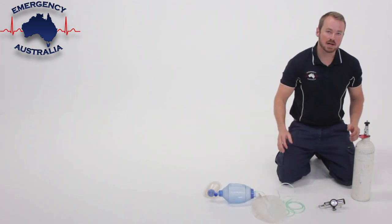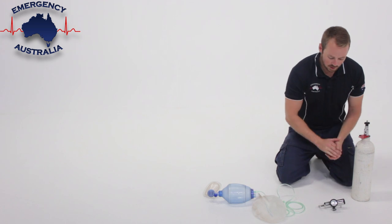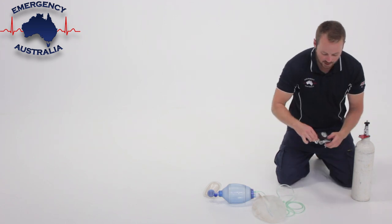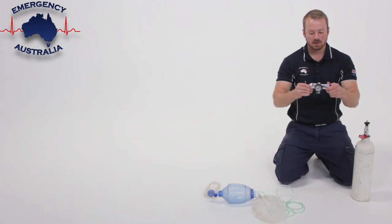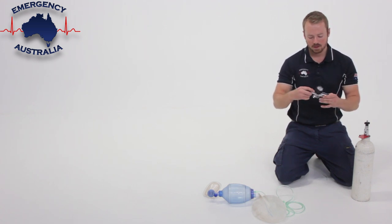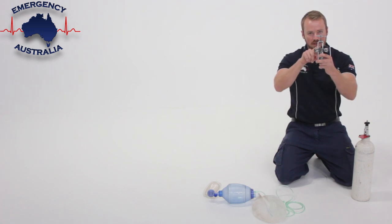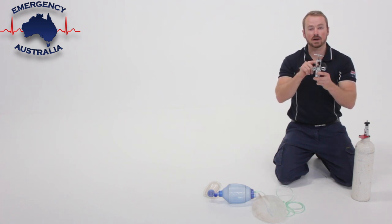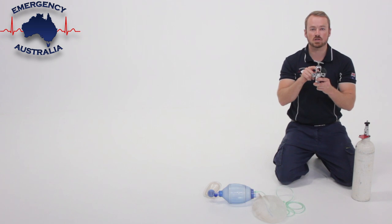Next is to set up the bottle. With the bottle we've got our regulator here. This regulator is designed to go from half a liter a minute to 25 liters per minute. Inside the regulator there is an O-ring. This can become perished over time, so just ensure you check it every now and then to ensure its serviceability.